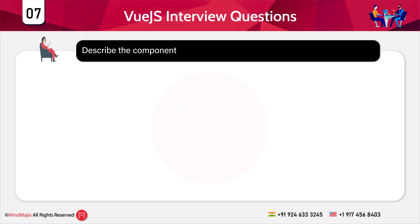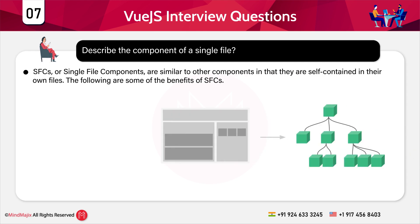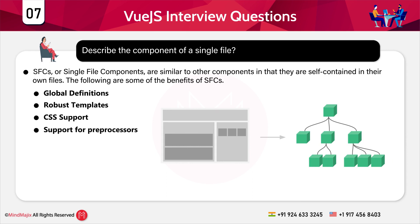The next question is: describe the single file component. Single file components (SFCs) are self-contained in their own files. The benefits of SFCs include: global definitions — all SFCs are registered globally with unique names; robust templates — you can easily create template code in SFCs rather than using a single template property; CSS support — SFCs allow you to apply CSS to the component itself; and support for pre-processors like Babel and Sass.